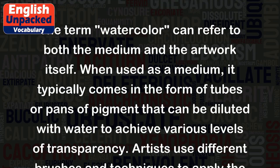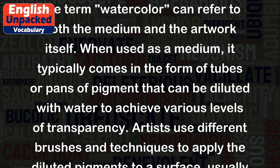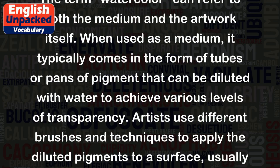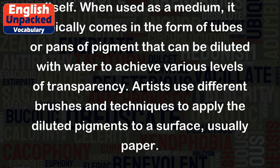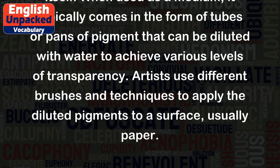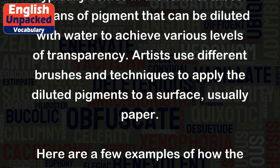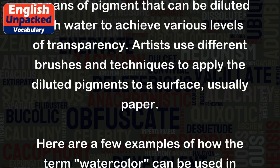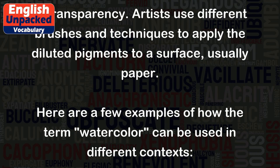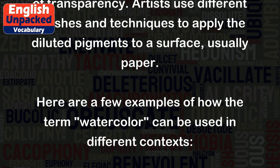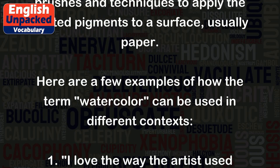When used as a medium, it typically comes in the form of tubes or pans of pigment that can be diluted with water to achieve various levels of transparency. Artists use different brushes and techniques to apply the diluted pigments to a surface, usually paper.